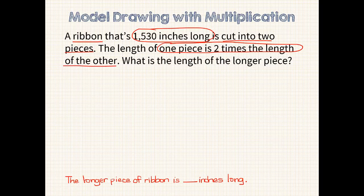Since I know this is a multiplication problem, I'm going to start out with both pieces of ribbon the same length, and then I will adjust them. Since one piece is 2 times the length of the other, I'm going to add another same size length to this first piece here. Next, I'll put the question mark in for the longer piece because that's what we have to find. We know that the ribbon started out 1,530 inches long, so I'll go ahead and show that our total will add up to that.